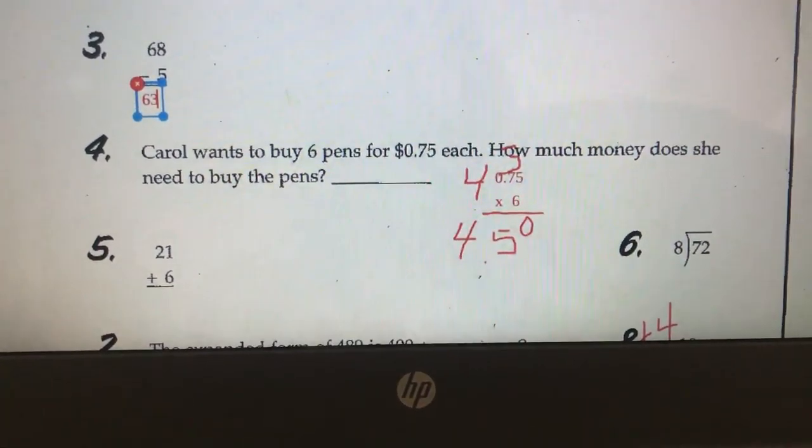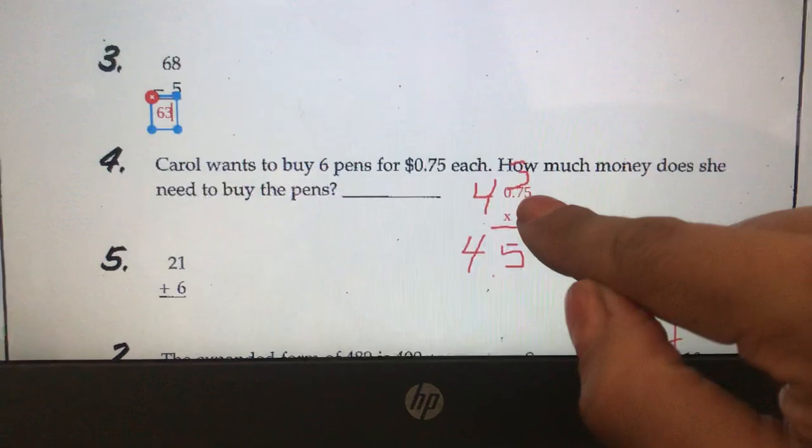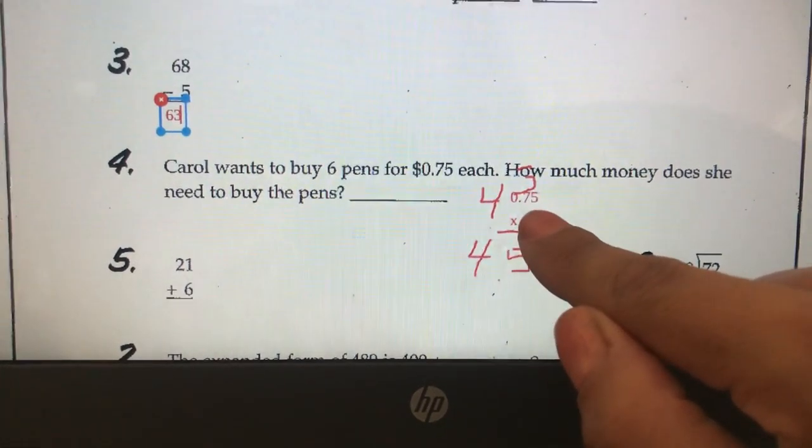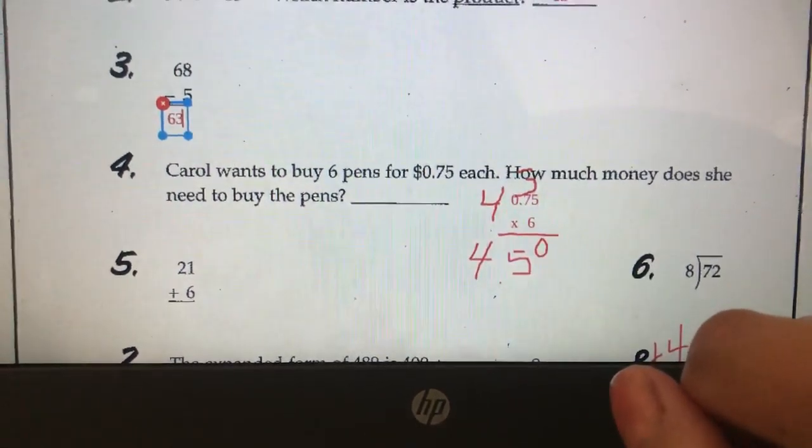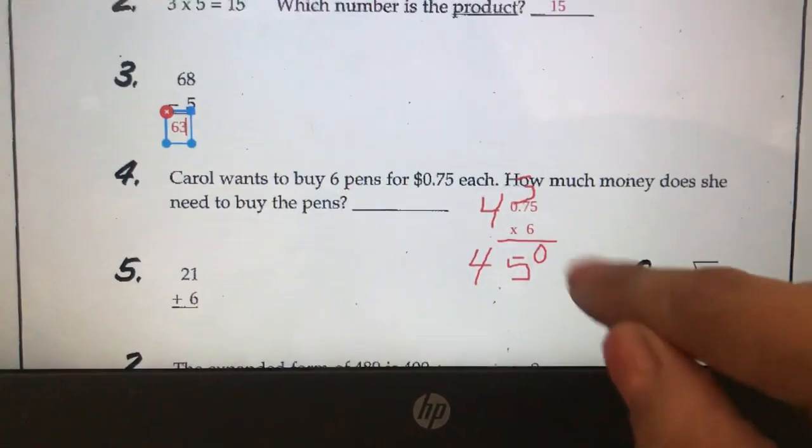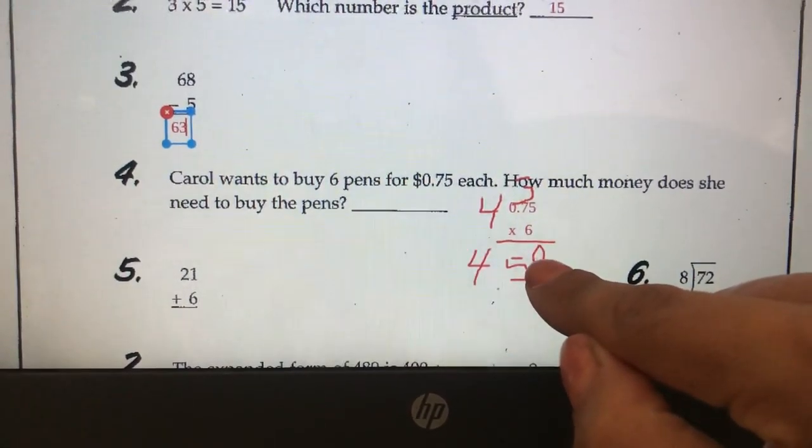Carol wants to buy 6 pens, that's why we have a 6 here, for 75 cents each, which we write exactly like this, 0.75. How much money does she need to buy the pens? If you do 6 times 5, you get 30. There's our 3. The 0 goes down here.